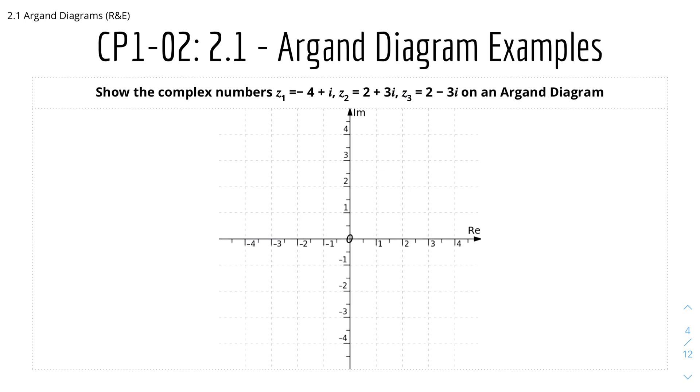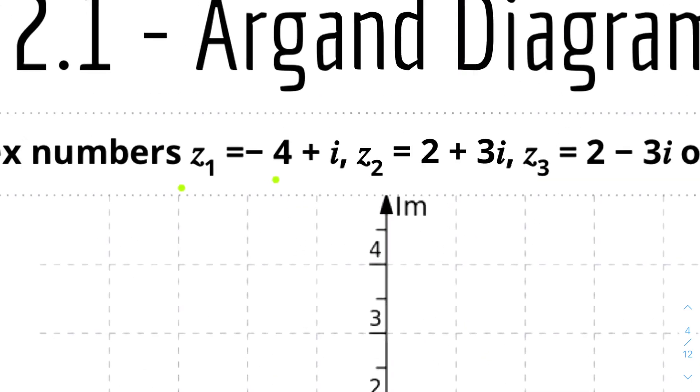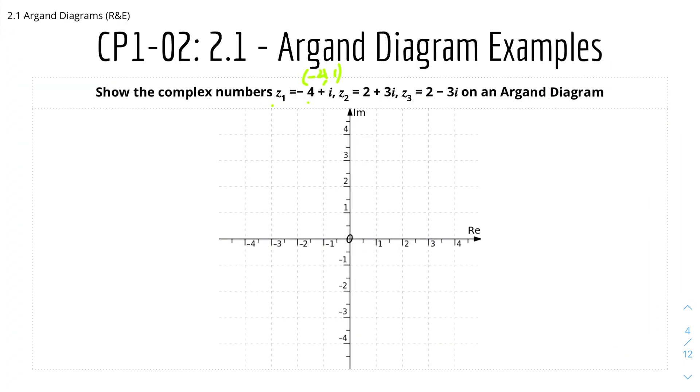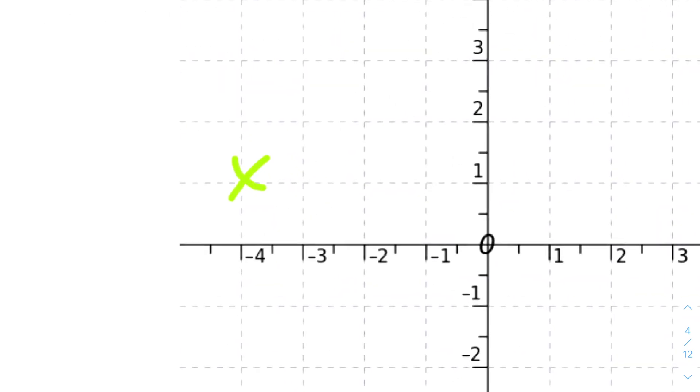Here we have an example for Argand Diagram. Show the complex numbers z1 equals minus 4 plus i, z2 equals 2 plus 3i, and z3 equals 2 minus 3i on an Argand Diagram. Let's start with z1. Minus 4 plus i means the x coordinate is minus 4 and the y coordinate is 1 because it's 1i. That means it's minus 4, 1, which will be here.